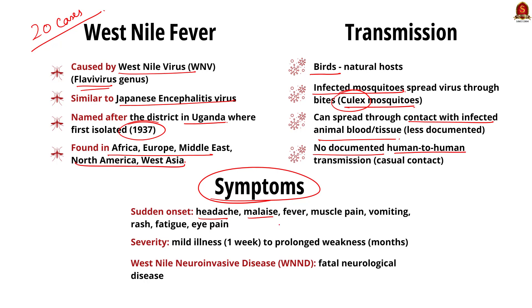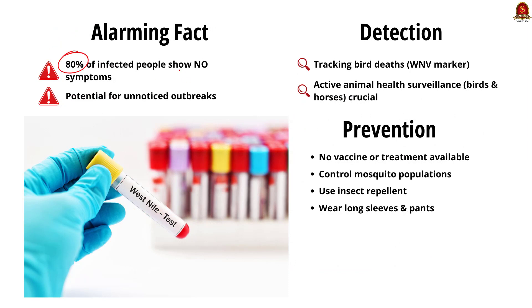Talking about the symptoms of West Nile fever: it is characterized by sudden onset of headache, malaise or uneasiness, fever, muscle pain, vomiting or rashes. The severity of symptoms ranges from mild illness for a week to prolonged weakness for months. It can also cause fatal neurological disease among humans, called West Nile neuroinvasive disease. Almost 80% of people infected with the virus will not show any symptoms, so the disease may go unnoticed and lead to an outbreak. One way to detect the presence of this virus in a region is by tracking bird deaths and also deaths of horses, as birds infected with this disease die due to illness, acting as markers for transmission.